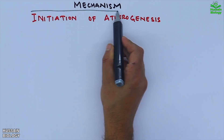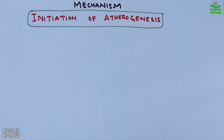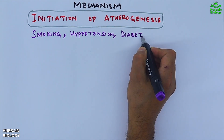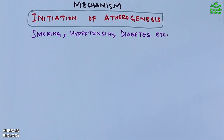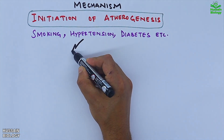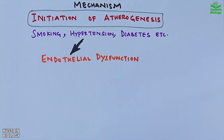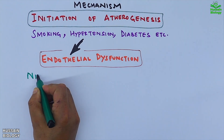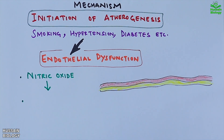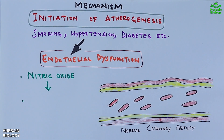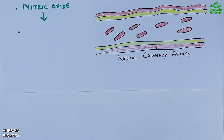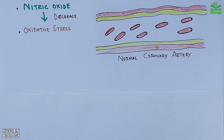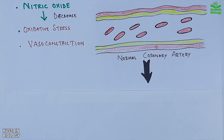The first step is the initiation of atherogenesis — the process of formation of plaques in the intima layer of arteries. Risk factors include smoking, hypertension, diabetes, and many more. These risk factors mediate endothelial dysfunction, where nitric oxide decreases. Under these risk factors, oxidative stress is elevated and we eventually get vasoconstriction, as shown in the diagram.